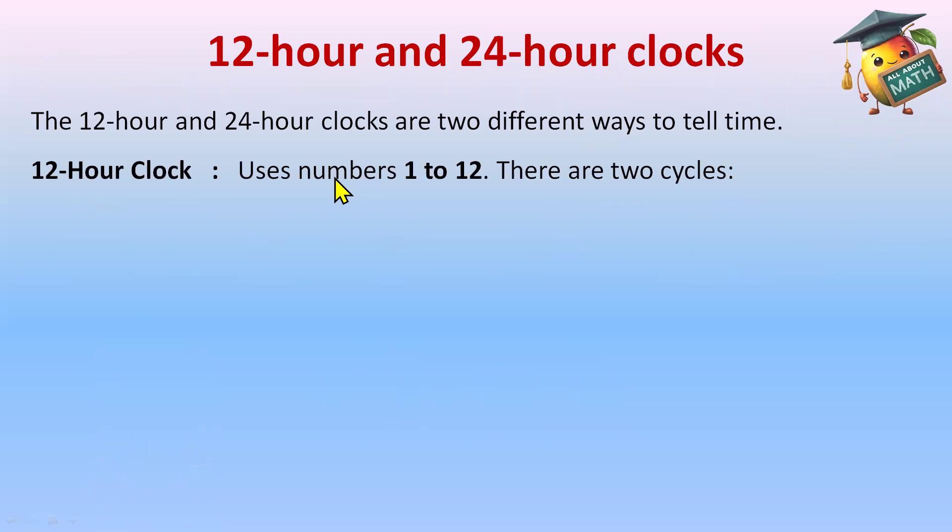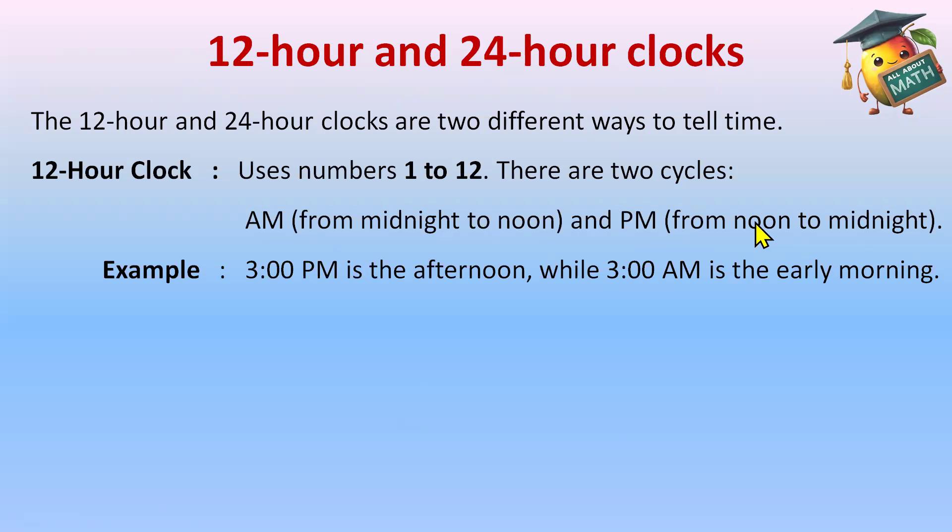12 hour clock uses numbers 1 to 12 and there are two cycles: A.M. from midnight to noon and P.M. from noon to midnight. For example, 3 P.M. is in the afternoon and 3 A.M. is the early morning.